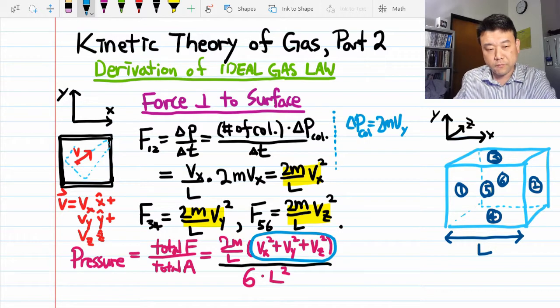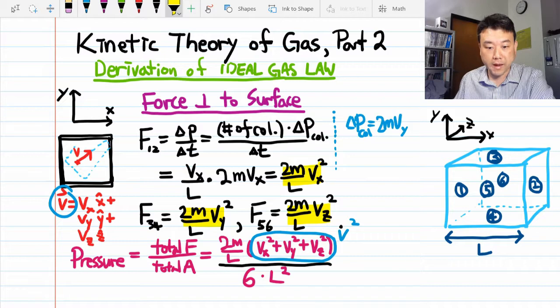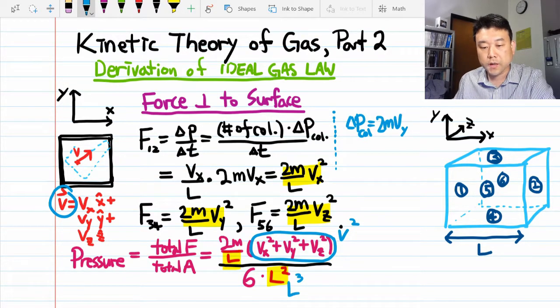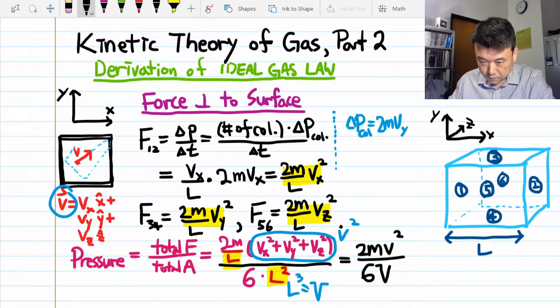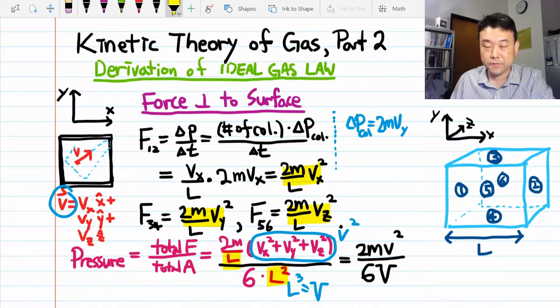Now we see some pretty cool simplifications. This vx squared plus vy squared plus vz squared, I hope you recognize this as the magnitude of the velocity vector, so I can simply write this as v squared. I'm going to be combining this L, so I get L cubed. But since we are dealing with the cube, L cubed is the volume or capital V. Making sure you are not confusing the lowercase v for speed with uppercase V for volume.